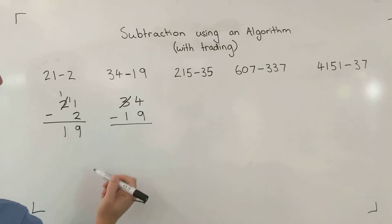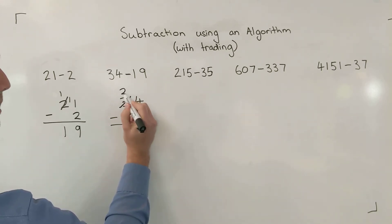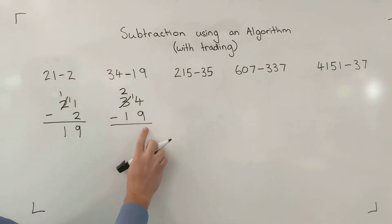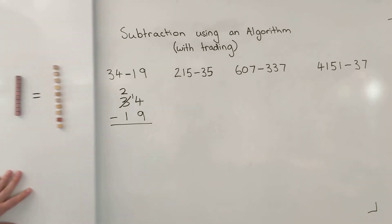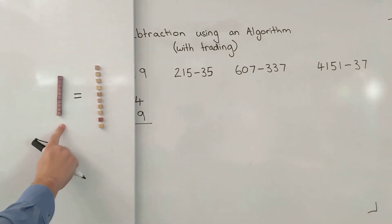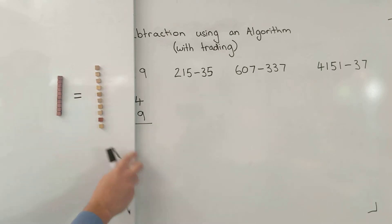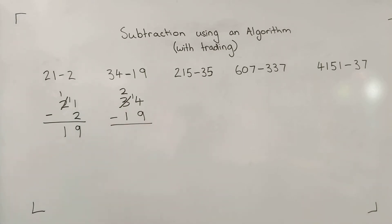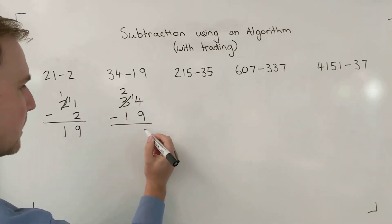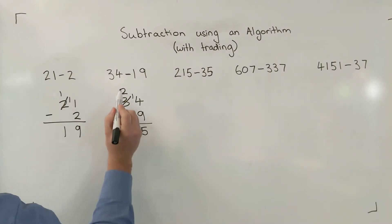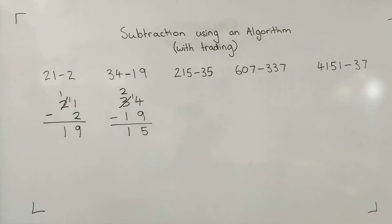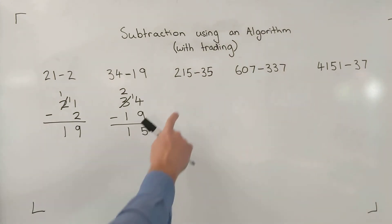I'll take one from the next column along, the 3 in the tens column. I take one away from there, cross it out, put a 2 up there so that I remember, and bring the one down — trade it into the ones column. That one from the tens column is the same as 10 ones. Now 14 take away 9 — I can do this: 14 take away 9 leaves me with 5. Then 2 take away 1 in the tens column leaves me with 1. So 34 take away 19 is 15 — that sounds reasonable.